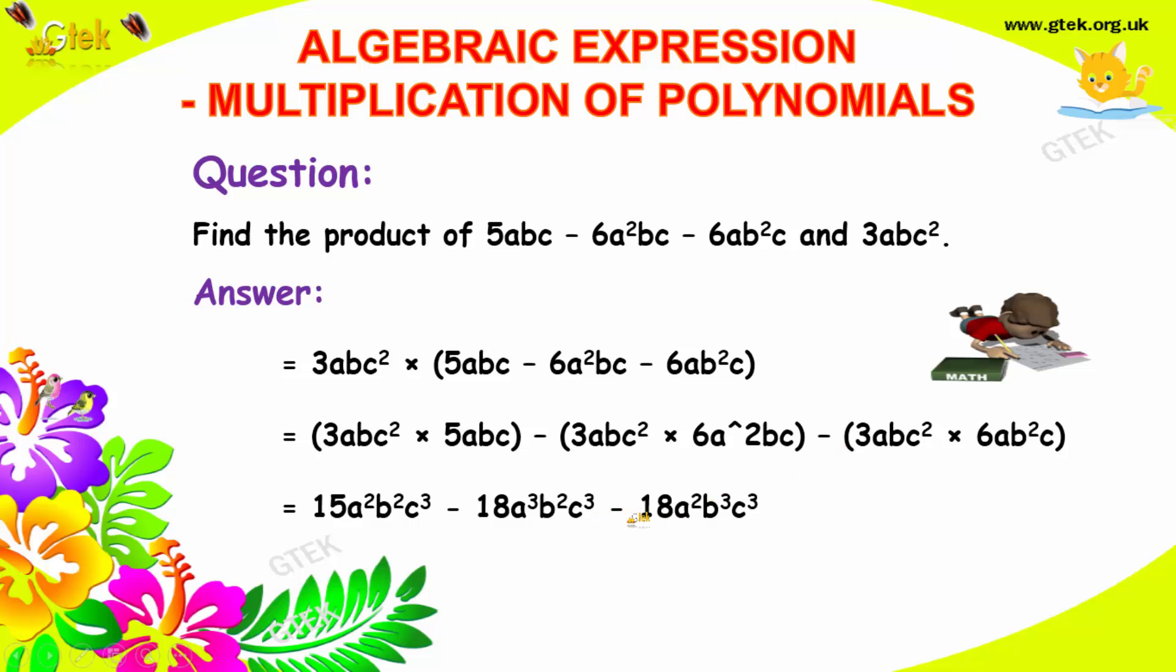So, minus, minus, you got minus. 3 into 6, it's 18. 1a and another a, a². b, b², it's 1b and 2b become 3b. 2c and 1c become 3c. So, you got the output, this one.